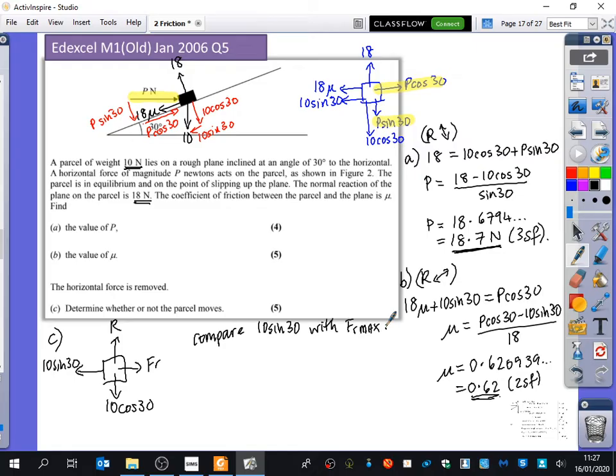What can you tell me about the size of the friction if 10sin30 is less than the maximum value of the friction? It's going to be 10sin30. It's going to be equal to it, because remember we said that friction will match the opposing forces that we've got there. So first of all, I'm going to compare, and the force that's trying to make it move down is 10sin30, which is 5 newtons.